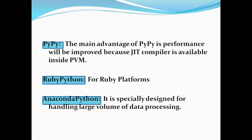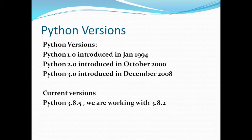Especially for data processing with very large volumes of data, we have a version called Anaconda Python, designed for handling large amounts of data. Coming to the different versions of Python: version 1.0 was introduced in 1994, version 2.0 in October 2000, and Python 3 was introduced in December 2008. The current version is 3.8.5, but I have installed version 3.8.2, which we will be using for the hands-on examples.